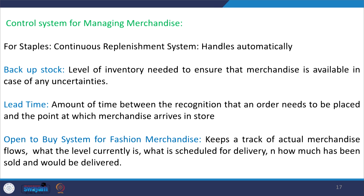For fashion merchandise, an open-to-buy system is used, which involves keeping track of actual fashion merchandise flows. This means checking the current level of stock, what is scheduled for delivery, and how many orders have been received. On the basis of these factors, you make an assessment.